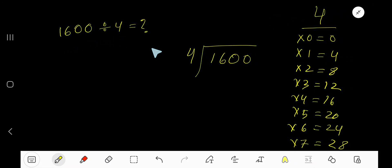1600 divided by 4. Here 4 is a divisor and 1600 is a dividend. Since 4 is a divisor, we need multiplication table of 4.